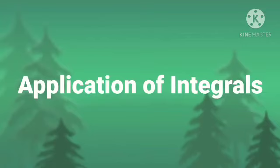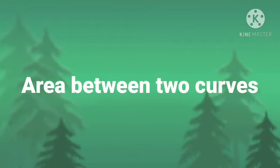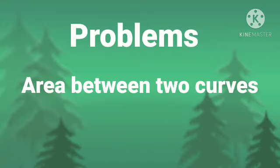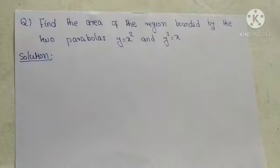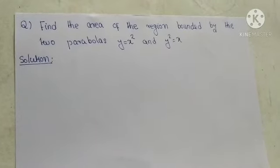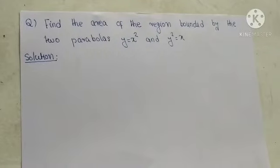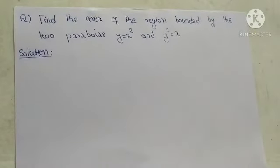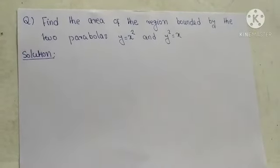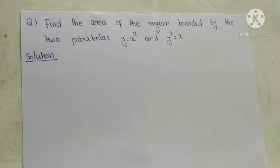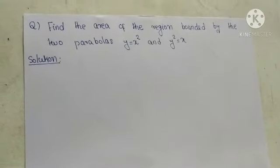Hi students. I am continuing the chapter applications of integral and today's topic is area between two curves. I am also discussing some problems related to this topic. So listen carefully. This is our first question: find the area of the region bounded by the two parabolas y equal to x square and y square equal to x. So let's start the solution of this question.